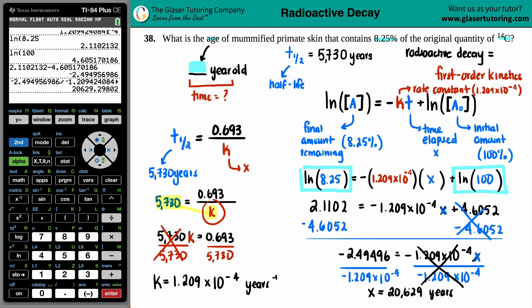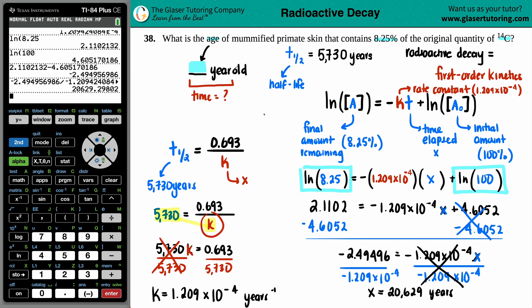X equals 20,629 roughly years because this is how much time has elapsed. So if 20,629 years have elapsed, what's the age of this primate skin? We're just going to call it 2.06 times 10 to the fourth years old. That's nuts. So that's the age of this mummified primate skin. So this primate was living 20,000 years ago. Wow. That's crazy.